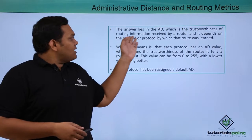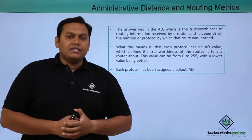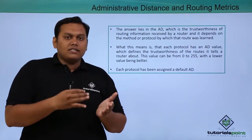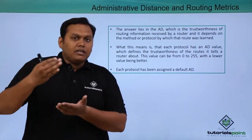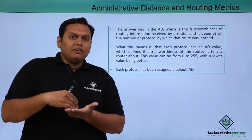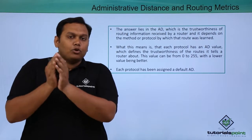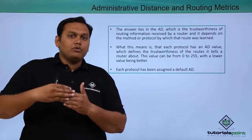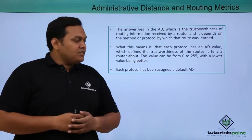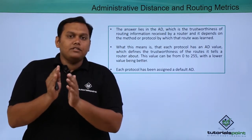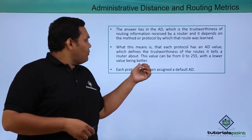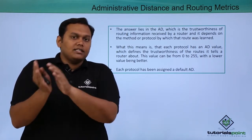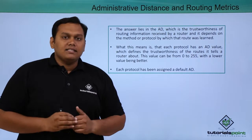The answer lies in the AD. Administrative distance is essentially trustworthiness. For example, between router B and router C, if router C is more trustworthy based on the protocol it is using, then the router will choose router C as the primary path and router B as the alternative path. The AD value can lie between 0 and 255, with the lower value being better — the lower the AD value, the more trustworthy the route.